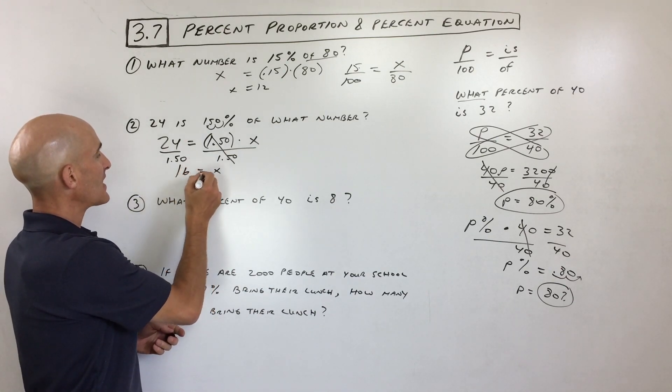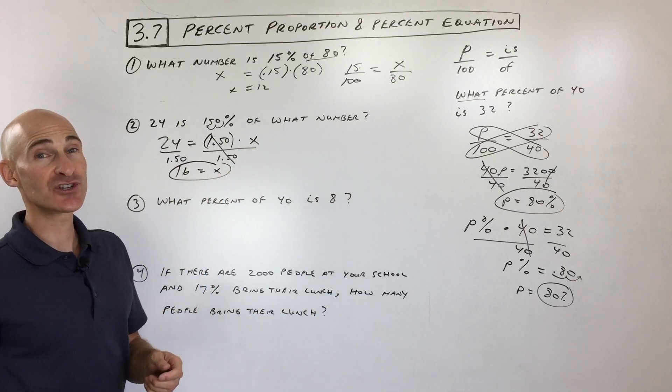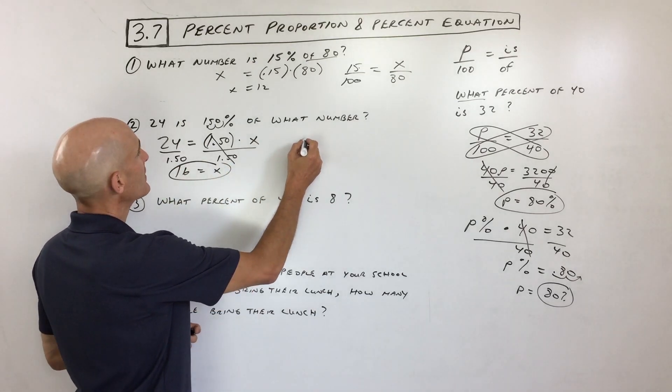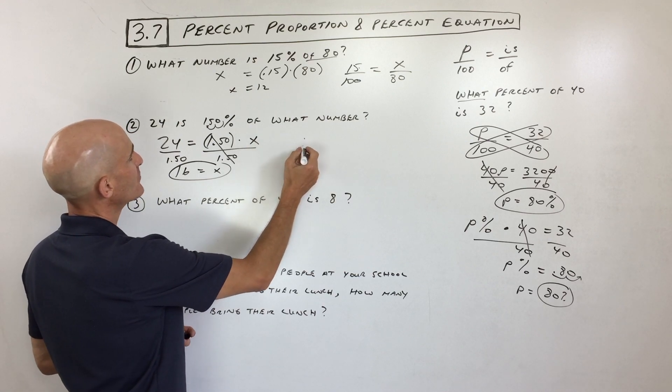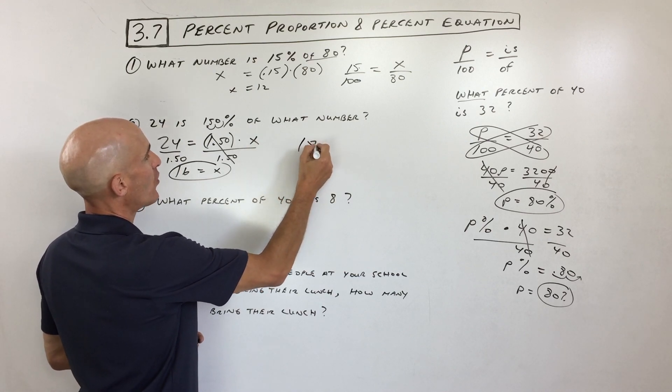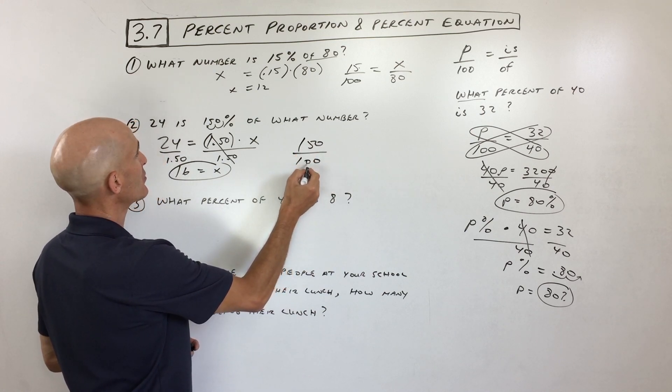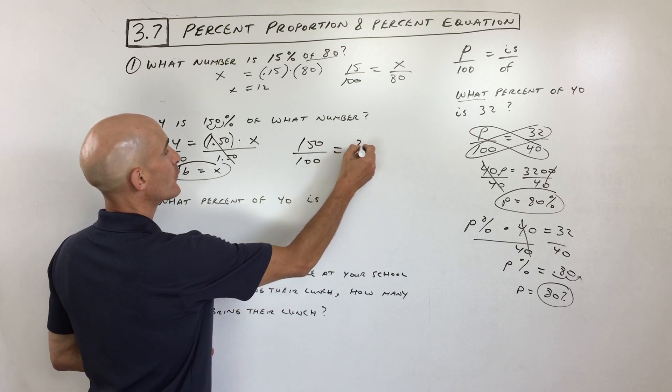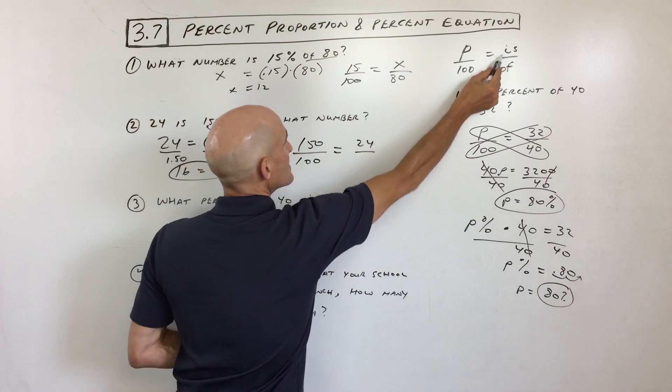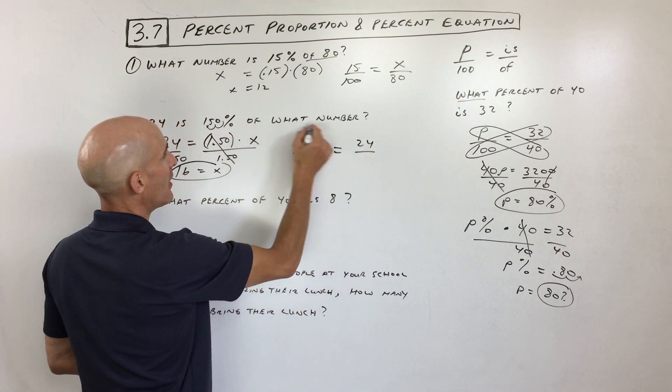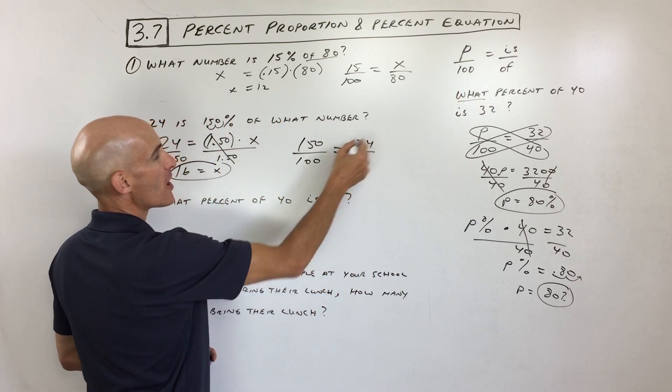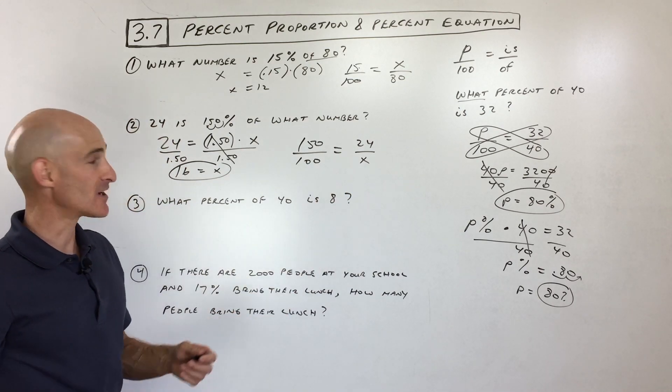Okay, now you're probably asking me, how would you do that as a proportion? Because some students do like the proportion method better. So let's see. So 24 is 150% of what number? So 150% is 150 out of 100, because percent means per 100 divided by 100. 24 is, see, is out of what number? See, of what number? That's the total. Cross multiply and solve like we did in the last section. Okay, number three.